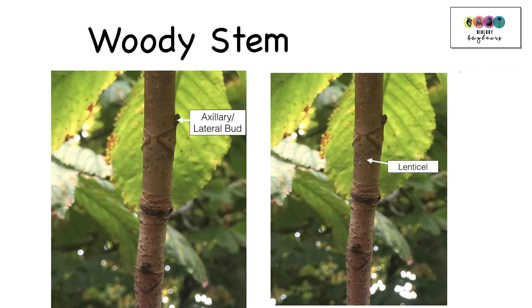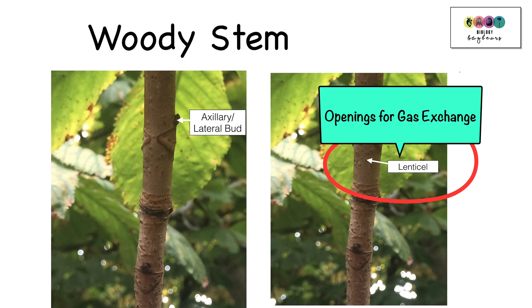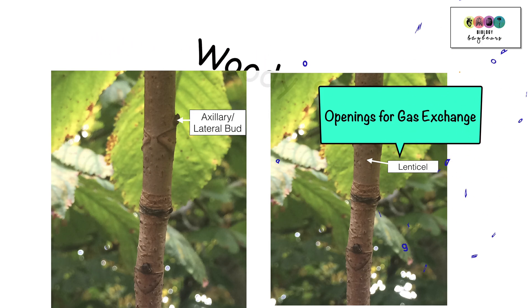Also visible on the woody stem are auxiliary or lateral buds. These are found in the axle where the petiole attaches the leaf to the stem, and also those apertures or openings for gas exchange, the lenticels. Through the lenticels, oxygen enters for cellular respiration, and carbon dioxide and water vapor exit.